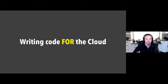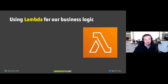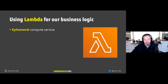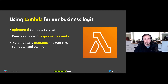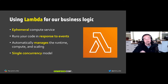When writing code for serverless, most of our business logic ends up inside a Lambda function. Lambda is an ephemeral compute service — it executes one small piece of code and goes away. It only runs in response to an event. It automatically manages the runtime, compute, and scaling, which is great, but it takes away some control. You have to be comfortable with that.